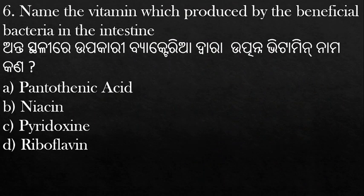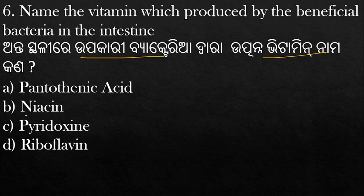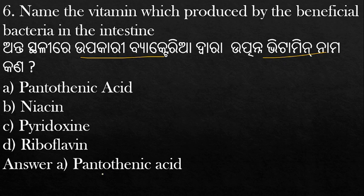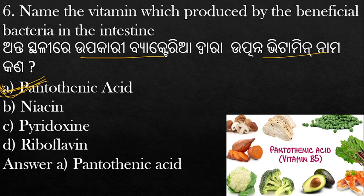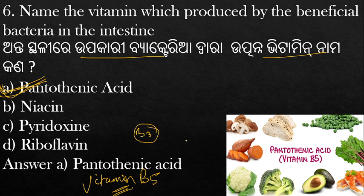Name the vitamin produced by beneficial bacteria in the intestine. The options are pantothenic acid, niacin, pyridoxine, and riboflavin. The answer is pantothenic acid, which is Vitamin B5. Foods rich in Vitamin B5 include mushrooms, peas, fish, avocado, broccoli, and cauliflower.